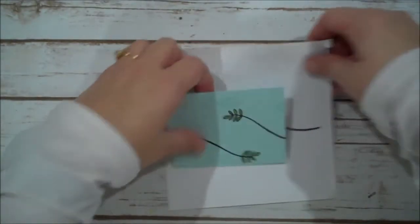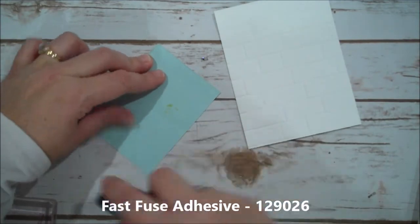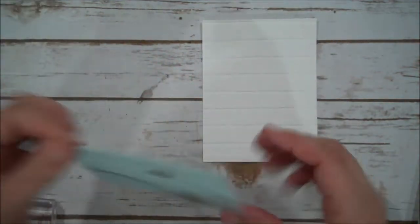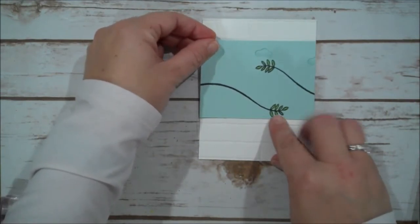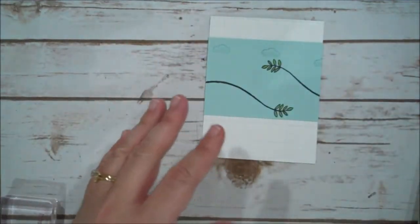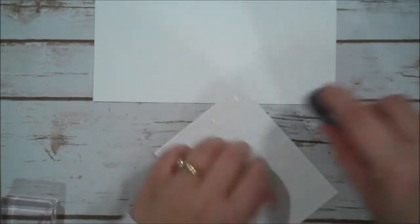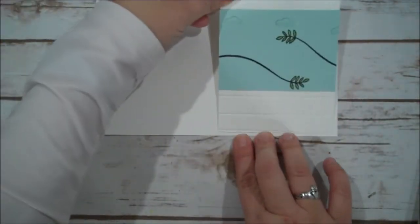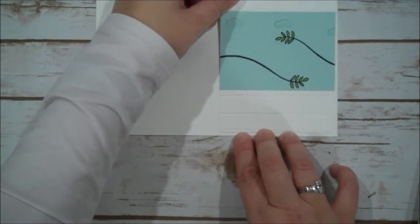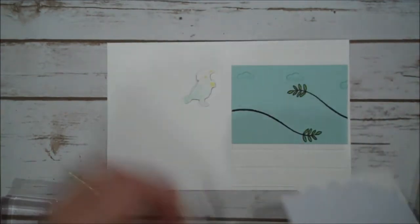Alright so let's start to assemble. Let's set that aside. I'm going to go ahead and use my Fast Fuse and we are going to lay this towards the top, give it at least you know one brick. Bring in my card base and I take my Fast Fuse and I'm going to run this around all four corners because it is embossed and then we will lay that down.